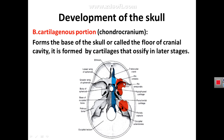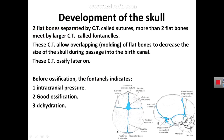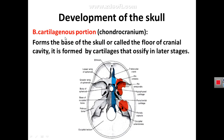The second part of the neurocranium is the base of the skull, which from above forms the cranial cavity. This part is called chondrocranium because it is not formed by membrane like the cranial vault, but by ossification of a precartilaginous model forming the bones of the base of the skull. This cartilaginous model ossifies, so developmentally this second part is described as the cartilaginous part, or chondrocranium.